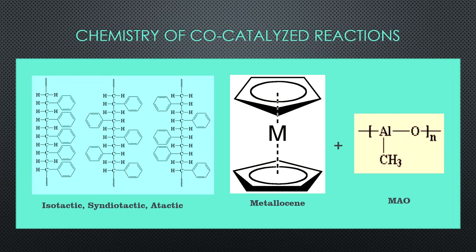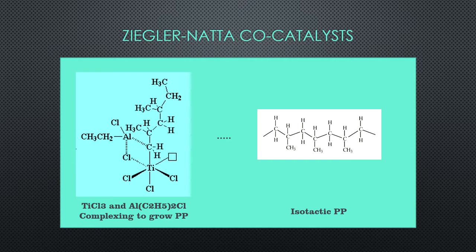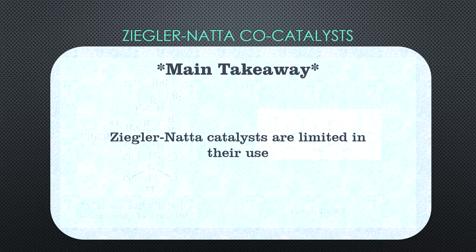Although Ziegler-Natta catalysts gave a stereoregular polymer, the tacticity of the resulting material was not easily tunable. Metallocene catalysts are the best thing to happen in polyolefin research since Carl Ziegler and Giulio Natta. Ziegler-Natta catalysts are known as multi-site catalysts. The complexes that form with titanium chloride and aluminum alkyl catalysts don't offer much versatility with polymer morphology. These catalysts are not soluble in solvent, which is problematic for industry.